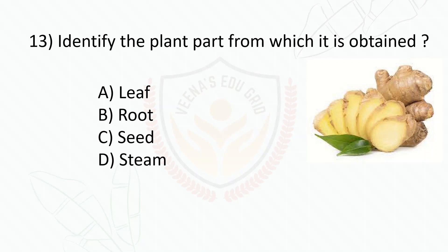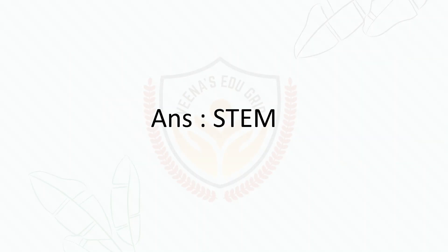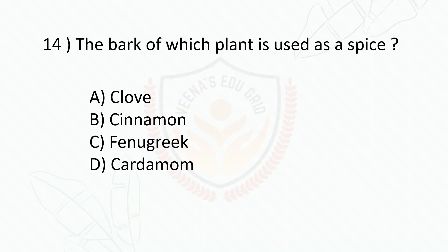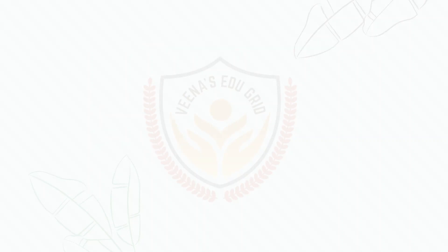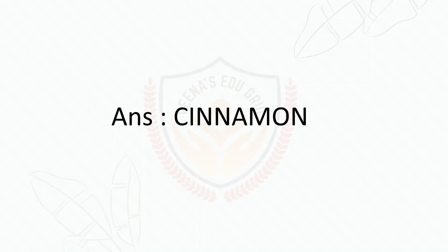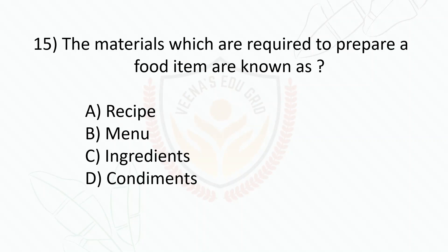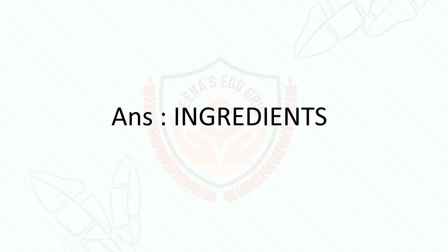The answer for the plant part question is stem. The bark of which plant is used as a spice: clove, cinnamon, fenugreek, or cardamom? The answer is cinnamon. The materials required to prepare a food item are known as: recipe, menu, ingredients, or condiments? The answer is ingredients.